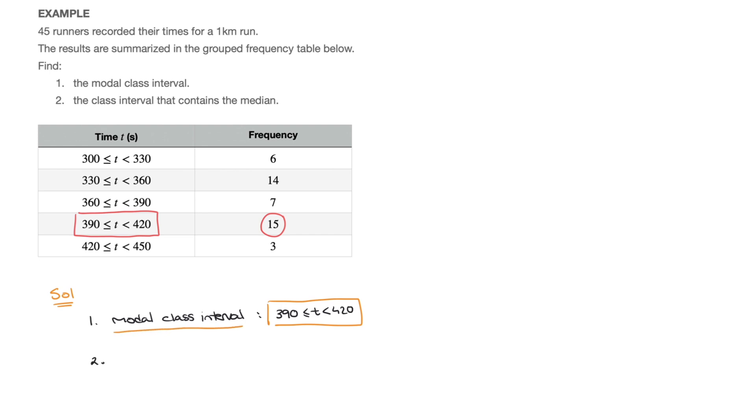Now, for question 2, we need to find the class interval that contains the median. And although you don't have to do this, what I like to do is add a cumulative frequency column to my table. So let me quickly add a column with some rows here. There we go. And I'll write cumulative frequency at the top.